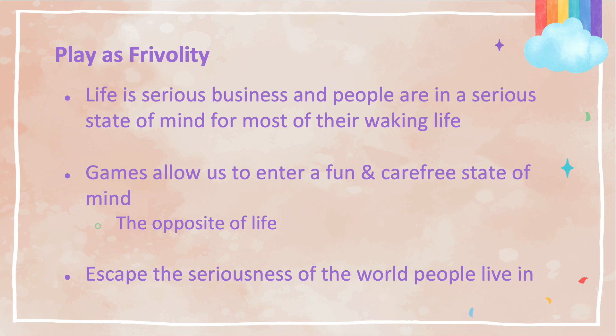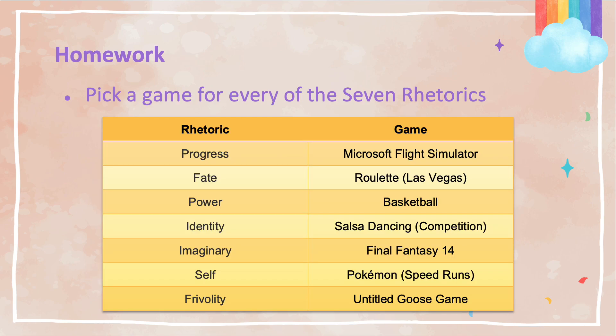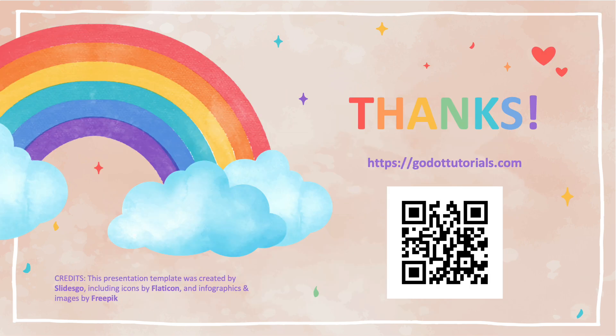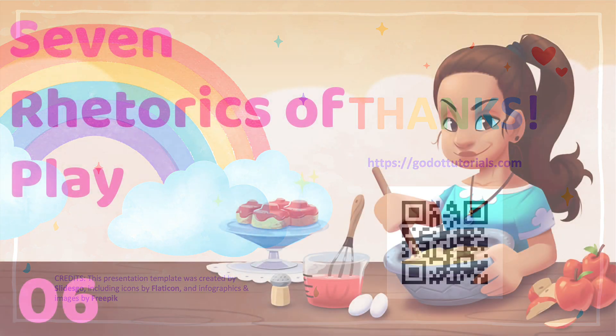The real question to ask is: what is fun? This leads us to our homework for this episode. Pick a game that satisfies a single rhetoric in the seven rhetorics of play. You should have seven unique games, so no sequels or prequels. The games do not have to be only video games — they can be any type of game. That's all I have for you in this episode. Thank you for subscribing and liking, and I look forward to seeing you in the next episode. Have an amazing day.